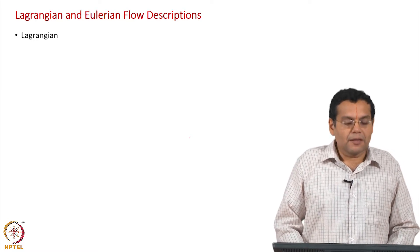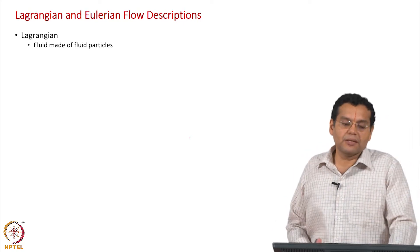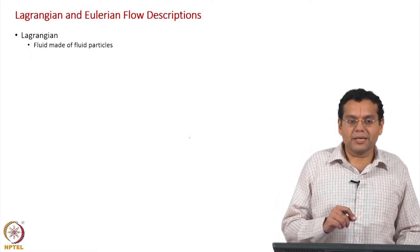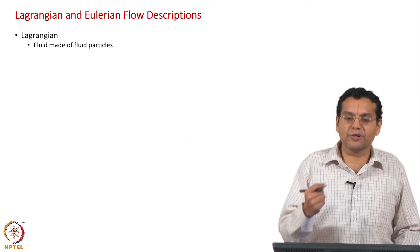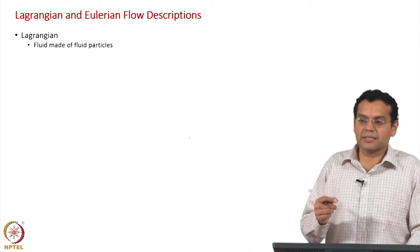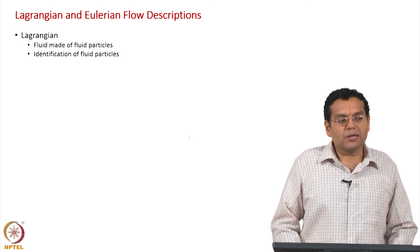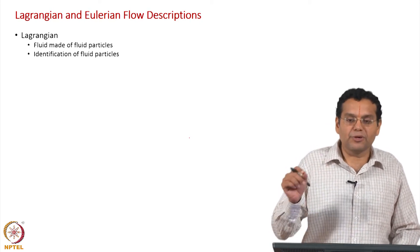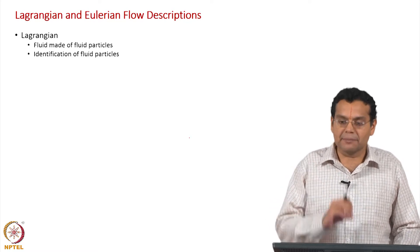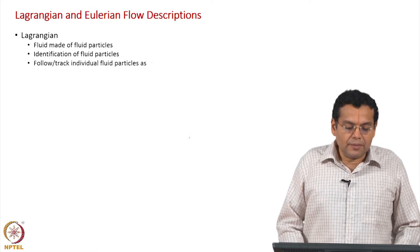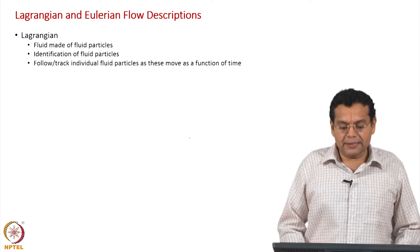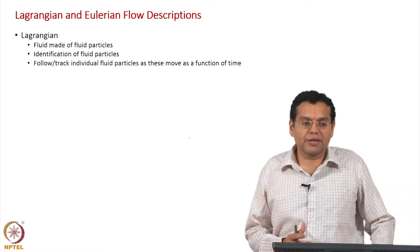First is Lagrangian. A Lagrangian approach is based on the idea that fluid is made of fluid particles. Even to start describing Lagrangian, we begin by taking a fluid particle — the concept of a fluid particle is integrated with the Lagrangian discussion. The Lagrangian approach involves identification of fluid particles; we identify them by coloring them, and then we follow those fluid particles as they move as a function of time.